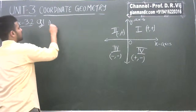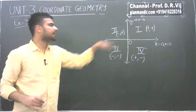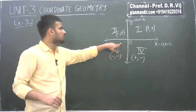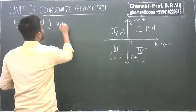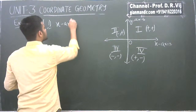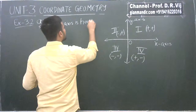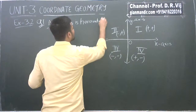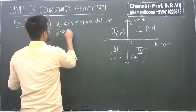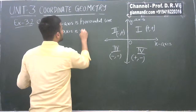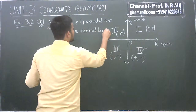Now, for the first part — they are asking what are the names of the horizontal and vertical lines. The horizontal line is the X axis and the vertical line is the Y axis. So, the X axis is the horizontal line, and the Y axis is the vertical line.